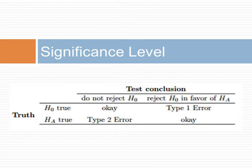Choosing a significance level for alpha is important in many contexts, and the traditional level is 0.05. However, it is often helpful to adjust the significance level based on the consequences of any conclusions reached from the test. If making a type 1 error is dangerous or especially costly, we should choose a small significance level — for example, 0.01. Under this scenario, we want to be very cautious about rejecting the null hypothesis, so we demand very strong evidence favoring the alternative hypothesis before we would reject the null hypothesis.